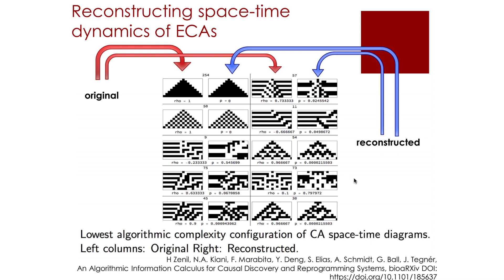Look at rules 57, 9, or 73. The reconstructed versions clearly captured some qualitative features of the original cellular automata, yet this is not reflected in the value of the Spearman correlation.